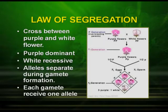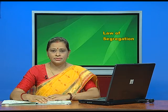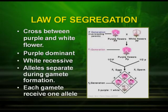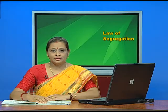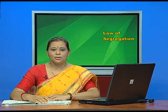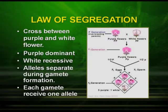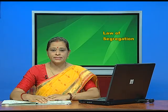Let us start with our discussion from the law of segregation. As you see in the picture, there is a cross between a purple and a white flower. The purple is dominant, having the genotype capital P capital P, and the white is recessive having small p and small p. During gamete formation, each of these alleles get separated, and then these two alleles get together during hybrid formation. So, each gamete receives one allele, and these alleles separate during gamete formation.